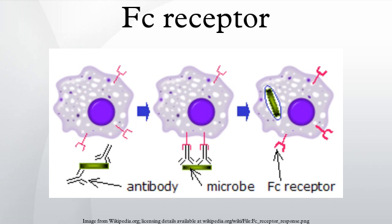After a pathogen has been bound, interactions between the FC region of the antibody and the FC receptors of the phagocyte result in the initiation of phagocytosis. The pathogen becomes engulfed by the phagocyte by an active process involving the binding and releasing of the FC region–FC receptor complex, until the cell membrane of the phagocyte completely encloses the pathogen.